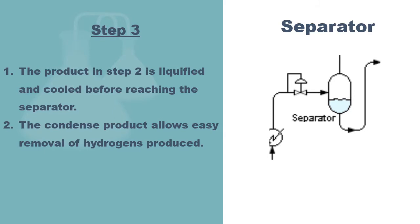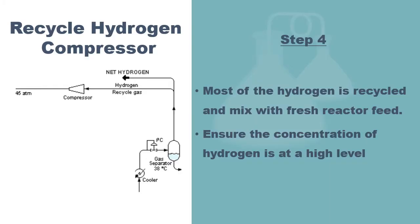The product from step two is liquefied and cooled before reaching the separator. This allows easy removal of hydrogen produced by the reforming reaction. The removed hydrogen is recycled in the recycle compressor and mixed with fresh reactor feed, which ensures the concentration of hydrogen is maintained at a high desirable level.